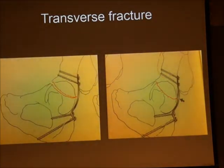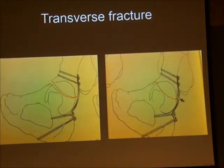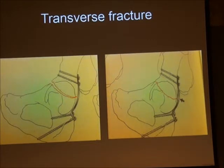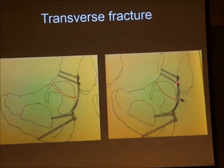When contouring the plate, with a posterior wall fracture you want to under-contour slightly to compress that fragment down. With a transverse fracture, do the opposite — over-contour the plate. If you leave it under-contoured or exactly contoured, the anterior fracture line will open up. Over-contouring means when the plate snugs down as you tighten the screws, it causes compression of the anterior fracture line, which is exactly what we want.